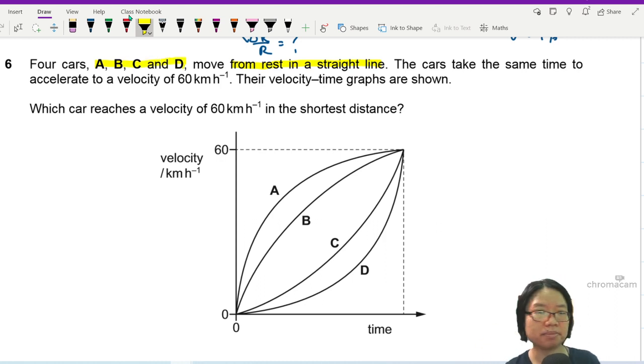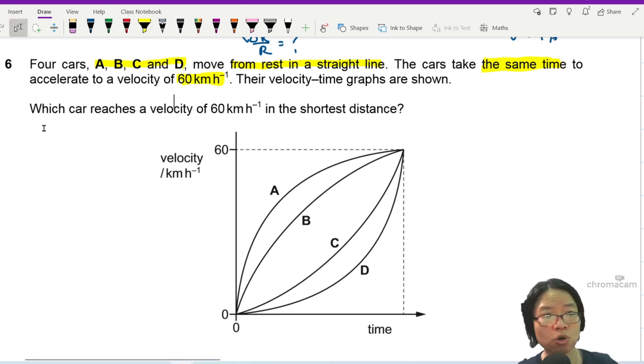The car takes the same time to accelerate to a velocity of 60 km per hour. Their velocity-time graphs are shown. Which car reaches a velocity of 60 km/h in the shortest distance?